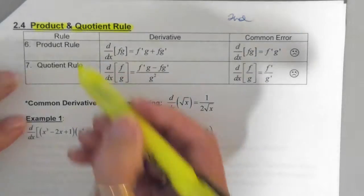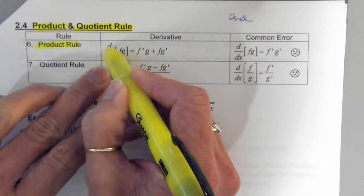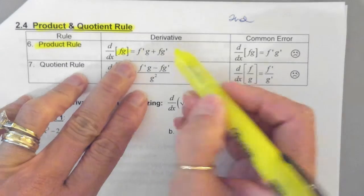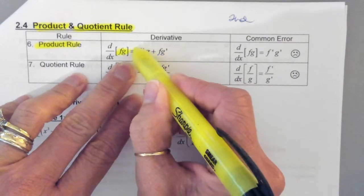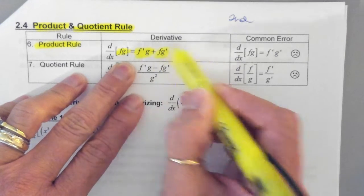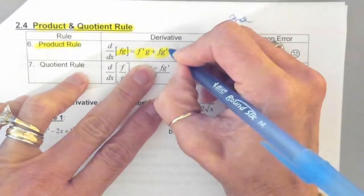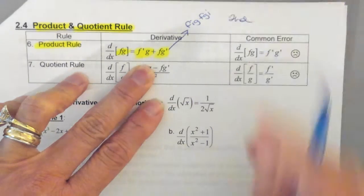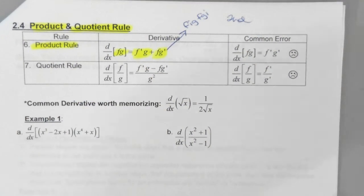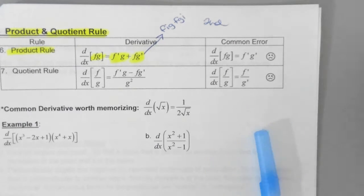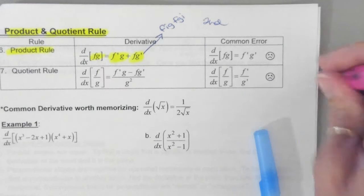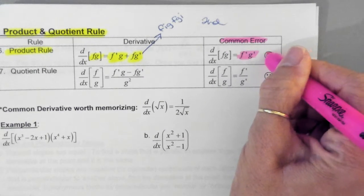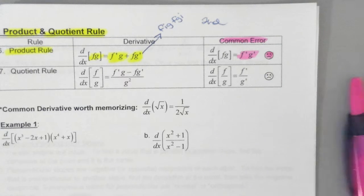Our product rule is here. Remember this is a command, and we are taking the derivative of the product. So it is the derivative of F times G, plus the derivative of G times F. And this right here, sometimes you'll hear fig figgy. It's just a way to remember it. Please do not make this mistake over here. Do not make this mistake. It is not F prime times G prime. This is an error. This is bad.